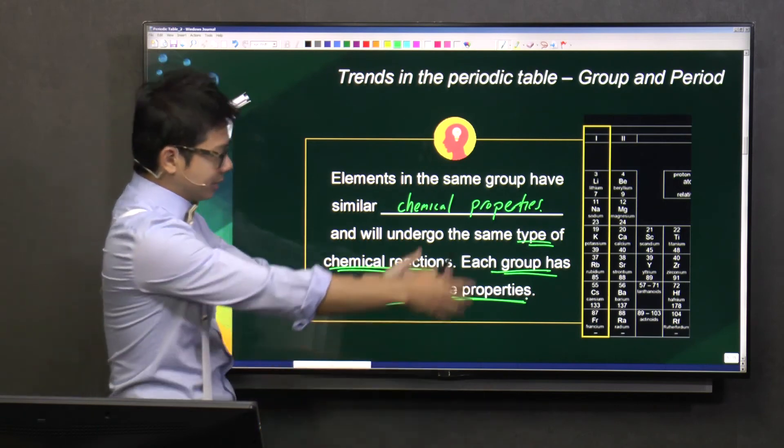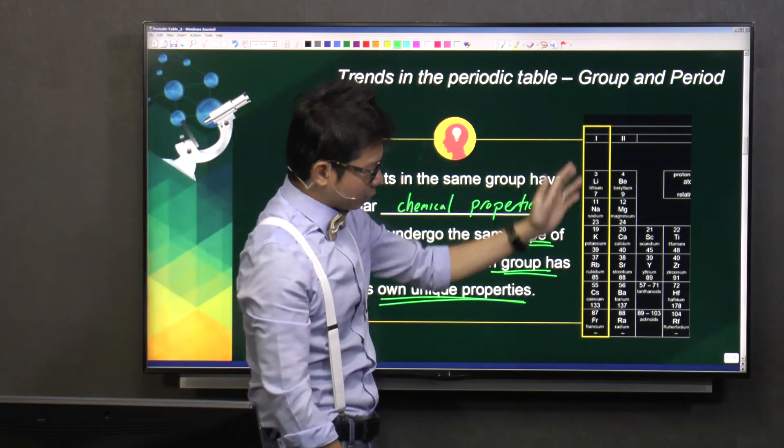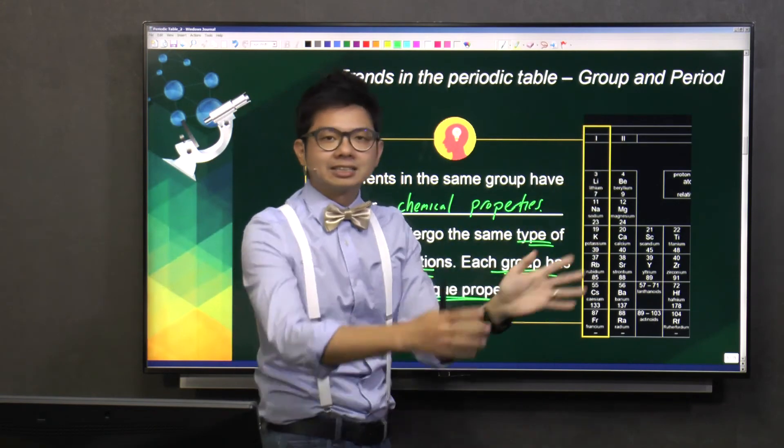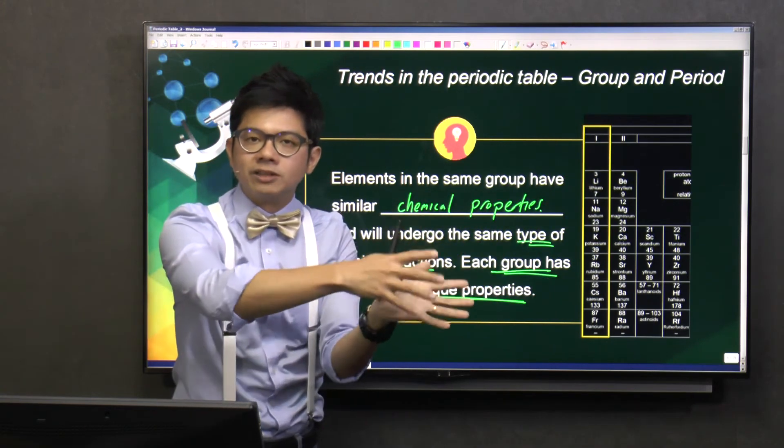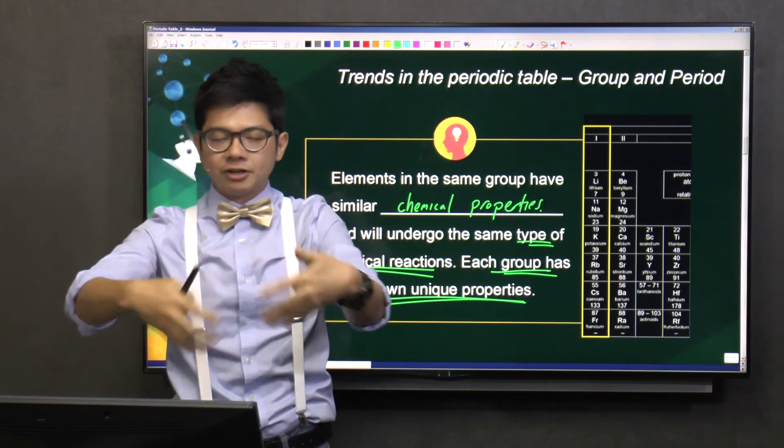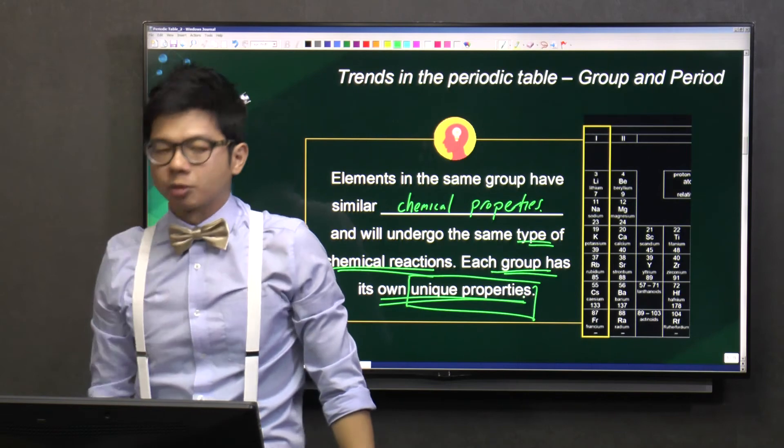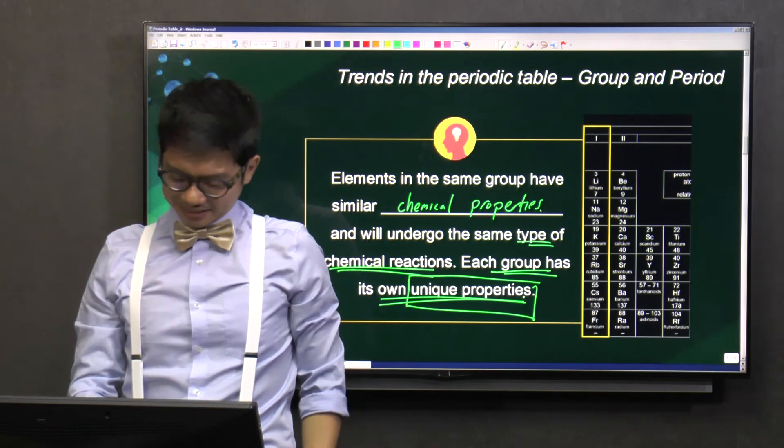So group 1, basically, all the elements in group 1, they will probably react with, let's say, water. And then group 2, they have another set of unique properties, and it will differ from group 3. So every group, they have their own unique properties. Clear about this?